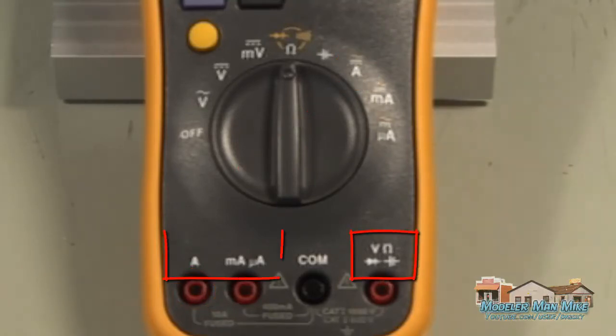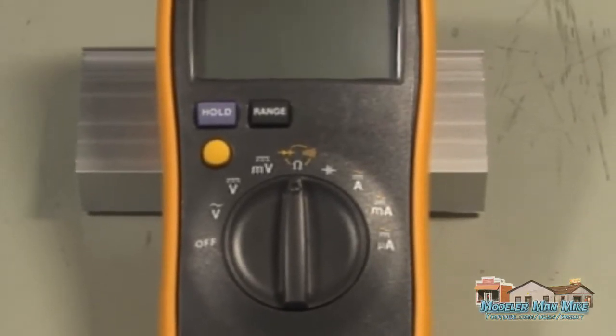And if you notice the ports are labeled so as long as you have your red lead plugged into the corresponding label to what you have selected on the dial, you'll be able to get the reading that you're looking for.